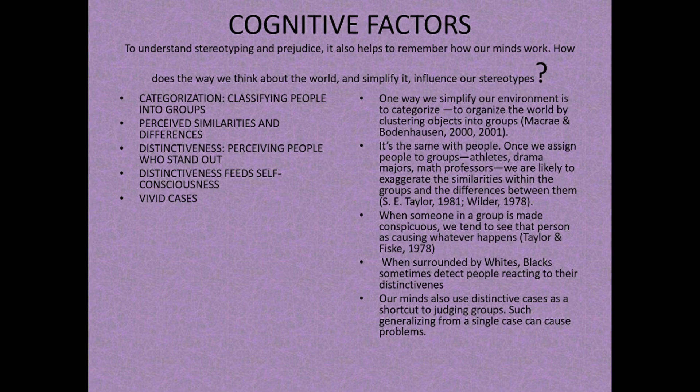The third major factor associated with causes of prejudice is cognitive factors. To understand stereotyping and prejudice, it helps to understand how our minds work — how the way we think about and simplify the world influences our stereotypes. The first cognitive factor is categorization — classifying people into groups. We simplify our environment by clustering objects and people into groups.